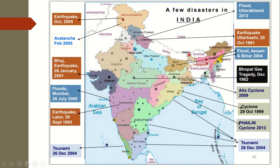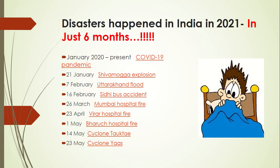This is a map of India showing various major disasters: the Uttarakhand flood of 2013, the Uttarkashi earthquake of 1991, the Assam and Bihar floods of 2004, the Bhopal gas tragedy of 1984, cyclones, the tsunami, the Latur earthquake, the Mumbai floods, the Bhuj earthquake, avalanches, and the Jammu and Kashmir earthquake, among others.